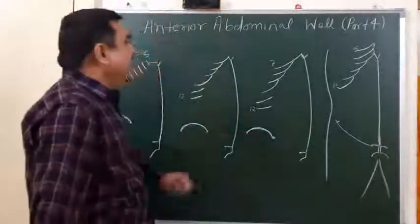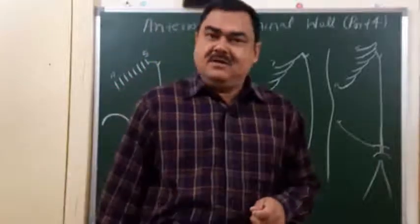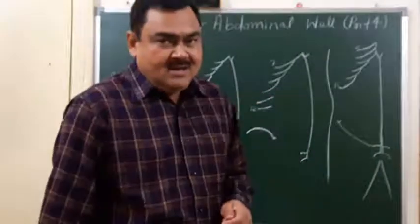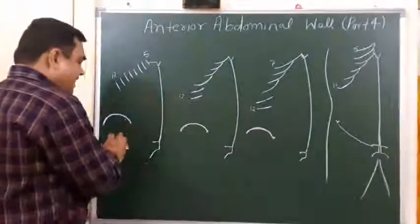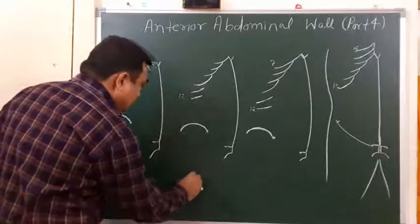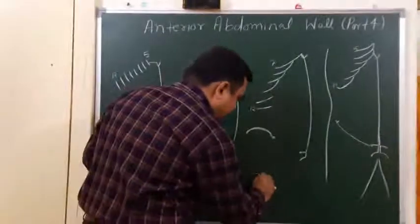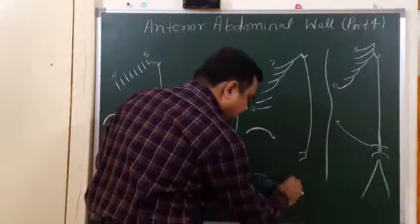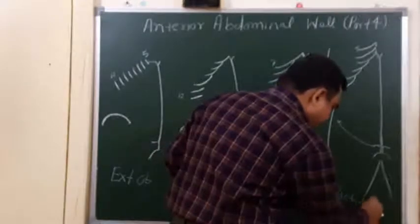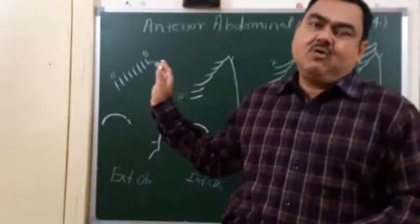Now we will discuss about the muscles of the anterior abdominal wall. There are six muscles present in the anterior abdominal wall. Four muscles are large muscles and two muscles are small muscles. These muscles are external oblique, internal oblique, transversus abdominis, and rectus abdominis. First of all, we will discuss about all four large muscles.